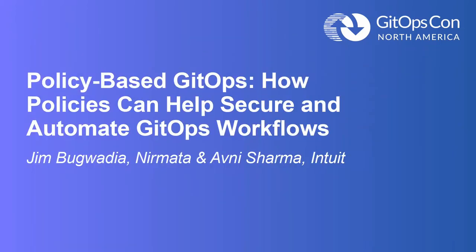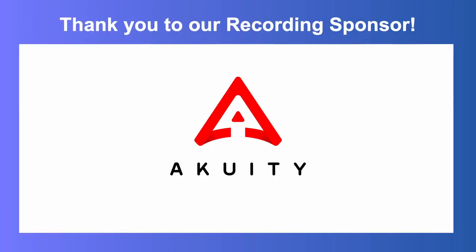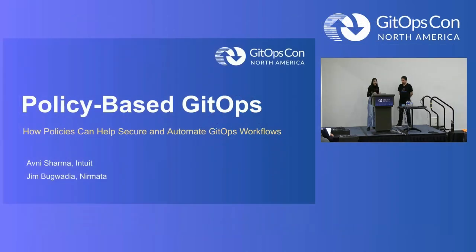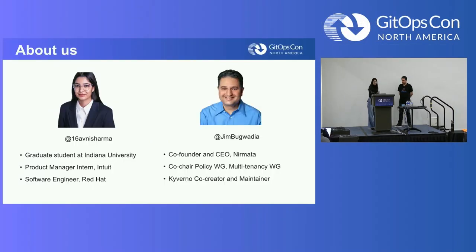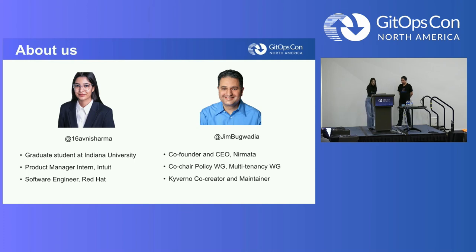Thank you Scott for the introduction. Our talk is about how we can use policies to have a secured and automated GitOps workflow. My name is Avni Sharma, I'm a graduate student at Indiana University, and I also interned as a product manager for the Argo CD project and was a software engineer at Red Hat. We also have Jim, who is co-founder and CEO of Nirmata, co-chair of the policy and multi-tenancy workgroups, and maintainer and co-creator of Kyverno.